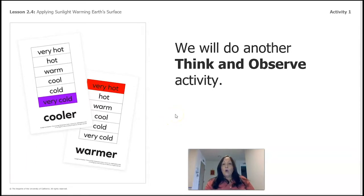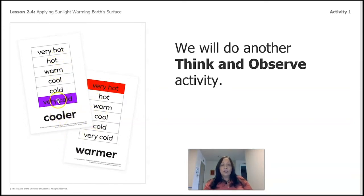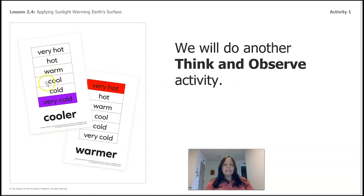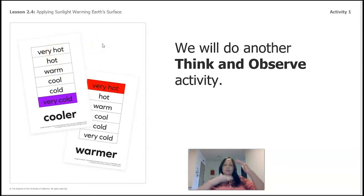We will do another think and absorb activity. We have been showing you these color cards: when we see the color purple, it's very cold. When we see the color red, it's really hot. We have different degrees of temperature — very cold, then cold, then warm, then hot, and then very hot. That's how the temperatures change.